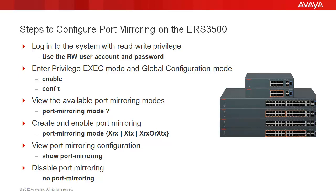Then we'll create and enable port mirroring using the command: port mirroring, then mode, followed by the format for one of the available modes, such as mirroring the packets received on port x, or packets transmitted on port x, or both received and transmitted by port x. To verify our port mirroring configuration, we'll use the command show port mirroring.